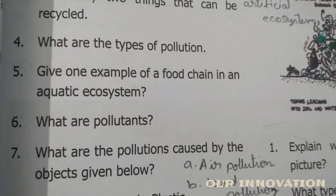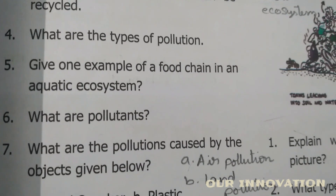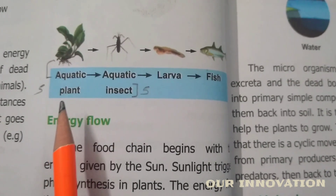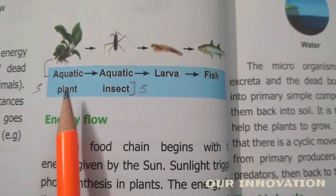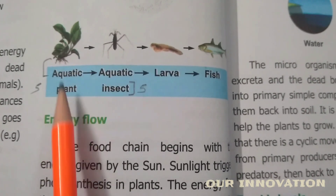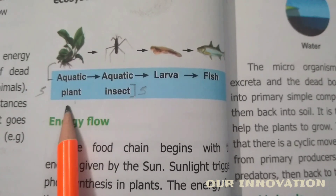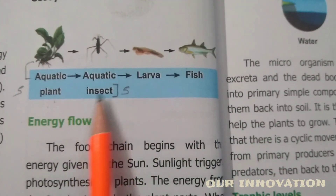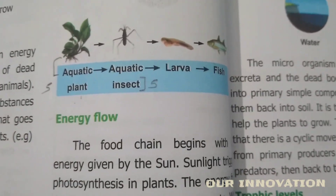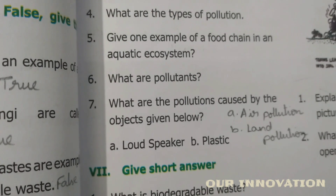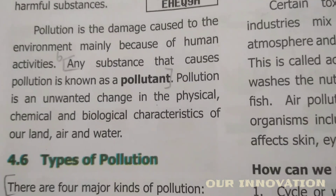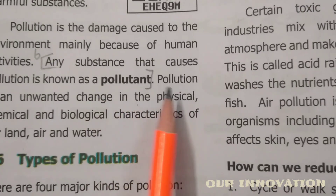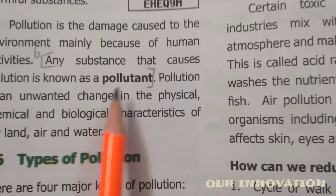Fifth question: give one example of a food chain in an aquatic ecosystem. From page number 50, the aquatic food chain example is: aquatic plant → aquatic insect larva → fish. Sixth question: what are pollutants? From page number 60: any substance that causes pollution is known as a pollutant.